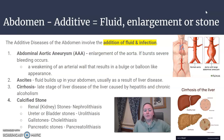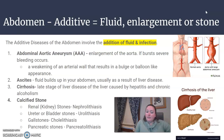Ascites is fluid buildup in the abdomen, usually a result of liver disease. Cirrhosis is the late stage of liver disease and is caused by hepatitis and chronic alcoholism.